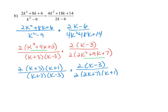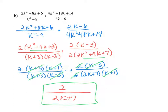Now let's look to see what we can divide out. We have k plus 3 in the numerator dividing out with k plus 3 in the denominator. The k minus 3 in the numerator divides out with k minus 3 in the denominator. The k plus 1 in the numerator divides out with the k plus 1 in the denominator. The factor of 2 in the numerator divides out with a factor of 2. What we have left is 2 in the numerator and 2k plus 7 in the denominator — that's our final simplified answer.